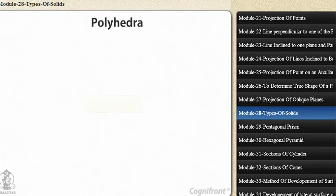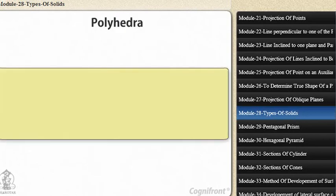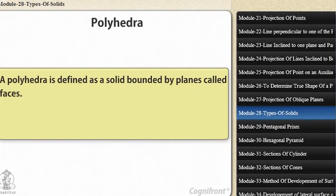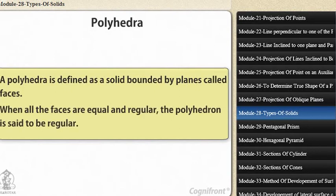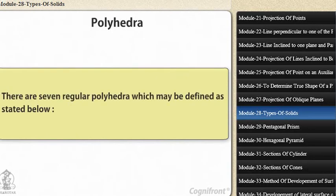Polyhedra. A polyhedron is defined as a solid bounded by planes called faces. When all the faces are equal and regular, the polyhedron is said to be regular. There are seven regular polyhedra which may be defined as stated below.